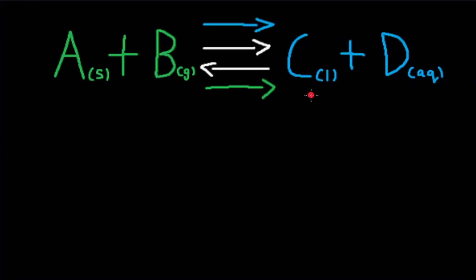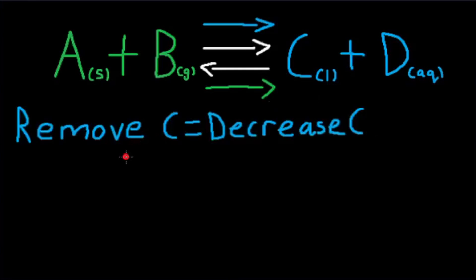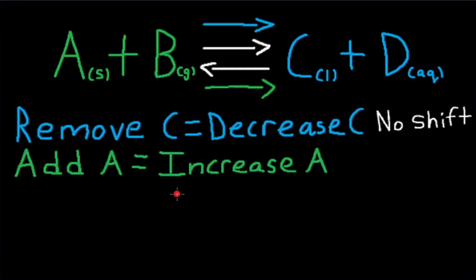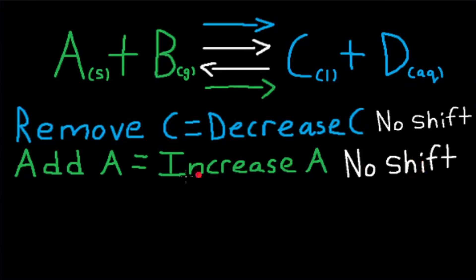If C is a liquid and it is removed, there would be no shift. If A is a solid and it is added, there would still also be no shift. This is because changing the concentrations of solids and liquids have no effect on the equilibrium.